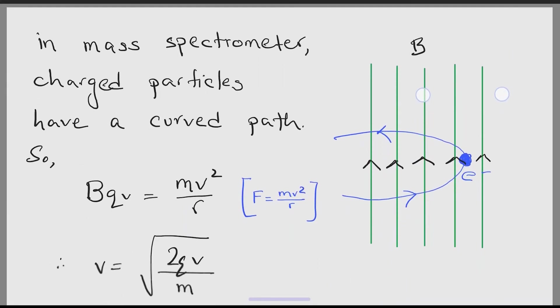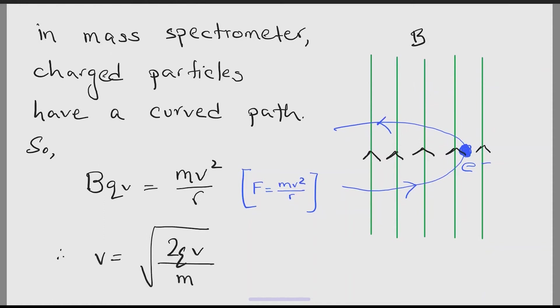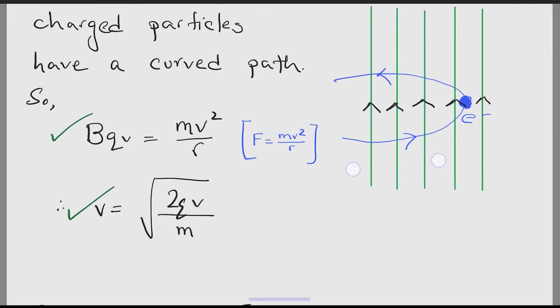In the mass spectrometer, when a charged particle enters a magnetic field, it changes its direction. As you can see in the diagram, the direction becomes curved. Here you can use the formula for centripetal force. This is an important equation that we use a lot in the question paper. This one too.